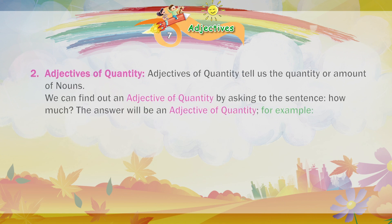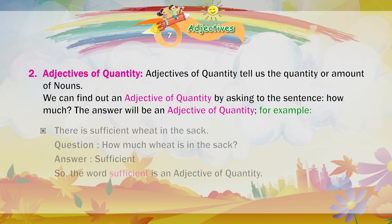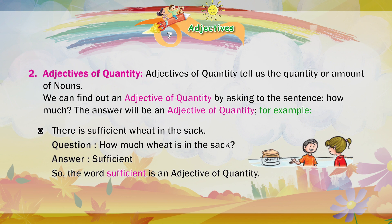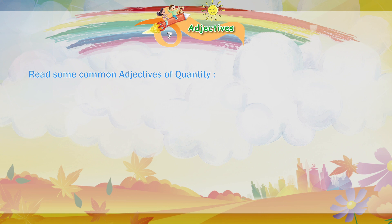Adjectives of quantity tell us the quantity or amount of nouns. We can find out an adjective of quantity by asking the question 'How much?' The answer will be an adjective of quantity. For example: There is sufficient weight in the sack. Question — How much weight is in the sack? Answer — Sufficient. So the word 'sufficient' is an adjective of quantity.